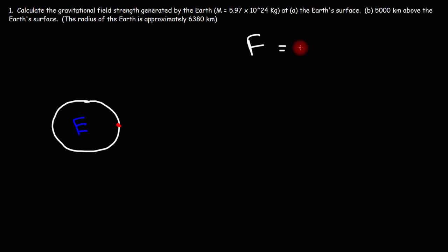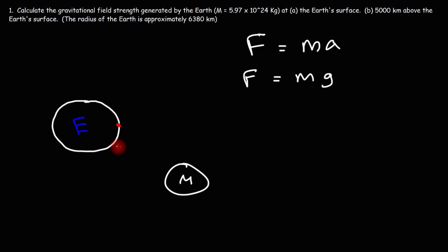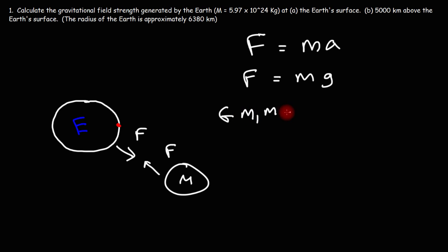First we need a formula. According to Newton's second law, the net force acting on an object is equal to the mass times the acceleration. When dealing with gravity, we use gravitational acceleration, which is g. Now the gravitational force acting between two objects, like the Earth and the Moon, is equal to the gravitational constant G times the masses of the two objects, divided by r squared.